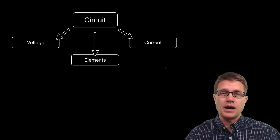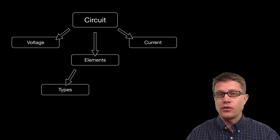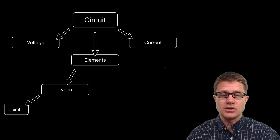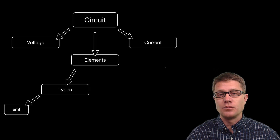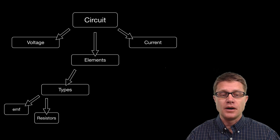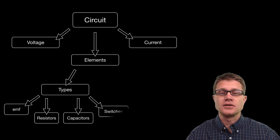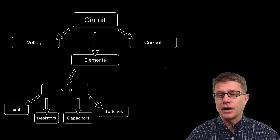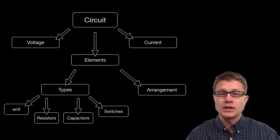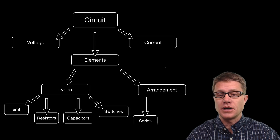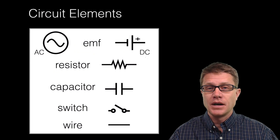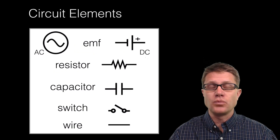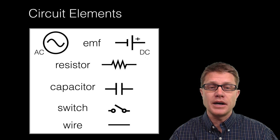You should also be able to understand how different elements in a circuit behave. The four elements in AP Physics you should understand are the electromotive force like the battery, also the resistors, the capacitors, and finally the switches. You should also understand how these elements are hooked together — are they in series or in a parallel circuit? This is what the circuit elements are going to look like.